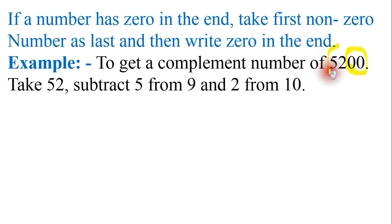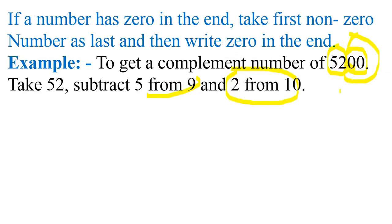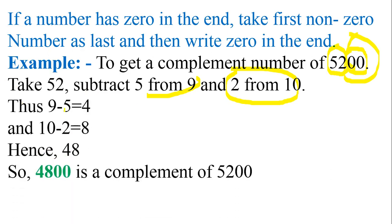The approach is simple: take only the non-zero digits — 5 and 2. Subtract 5 from 9 and this 2 from 10. You do not need to worry about the zeros. Whatever output you get, write it first, then put the zeros at the end. So: 9 minus 5 is 4, and 10 minus 2 is 8. You get 48, and then you put the two zeros at the end. So 4, 8, 0, 0 is the complement of 5, 2, 0, 0. Very simple.